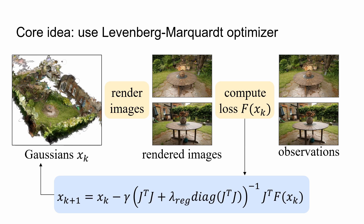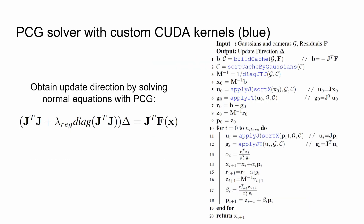In every iteration, we compute a photometric loss and solve the normal equations to obtain a parameter update for the Gaussians. We solve the normal equations with the PCG algorithm. To this end, we create a new fast implementation of PCG with custom CUDA kernels.